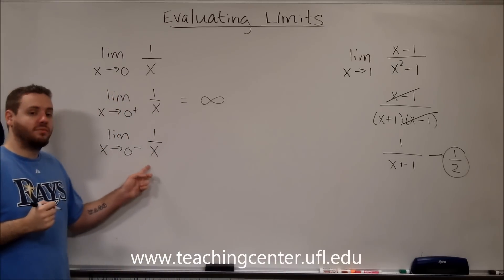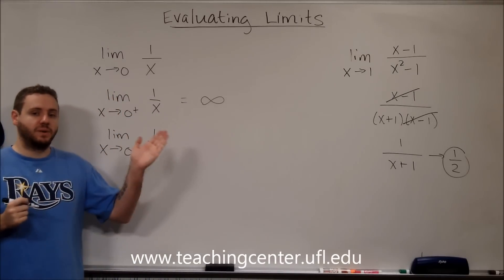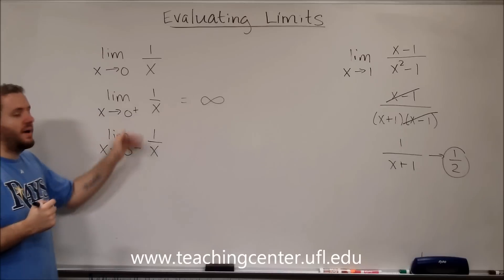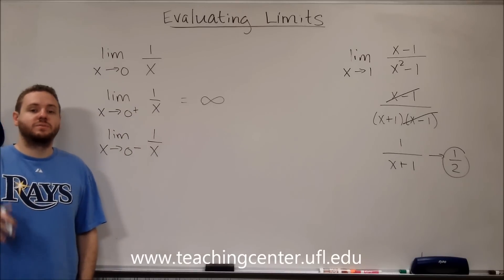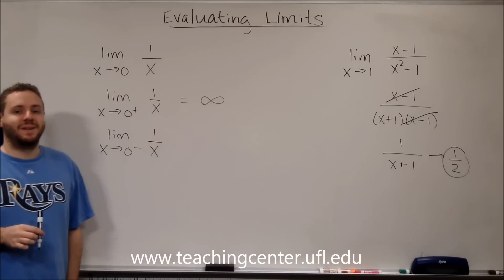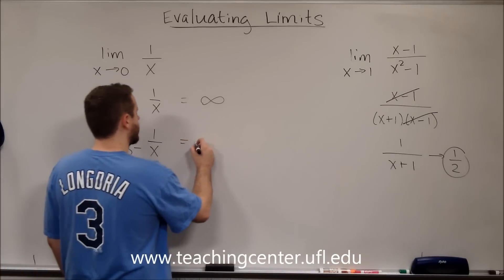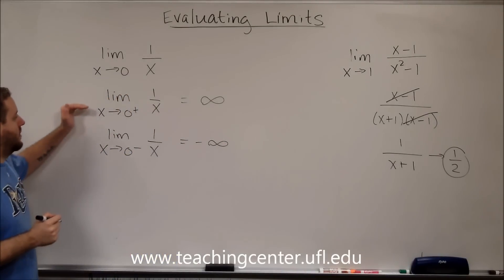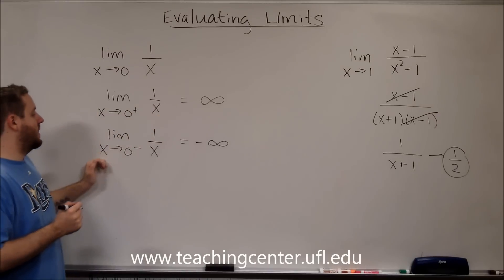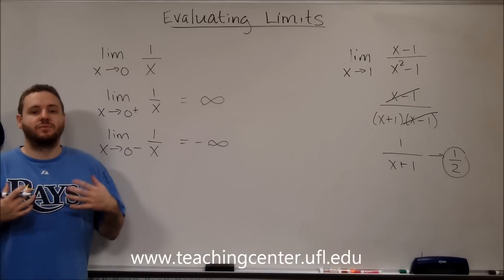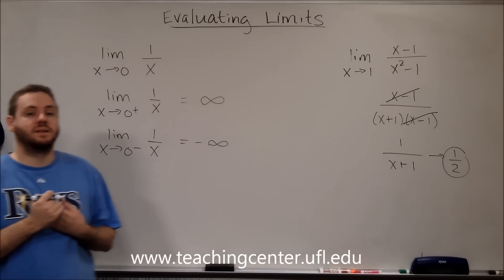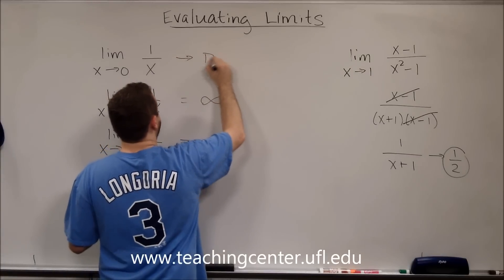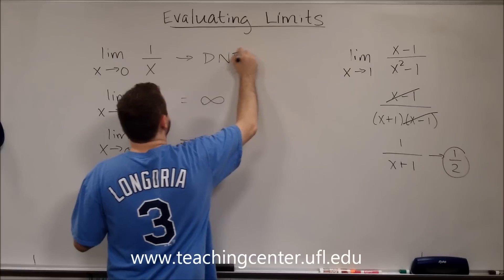Similarly here, now we have really small negative numbers. We're getting close to zero from the negative side. Again, you're dividing by a very small number, so the number gets really large. However, these would be negative, so we get negative infinity. From the right we had infinity, from the left we had negative infinity, therefore this limit does not exist because the left and the right are the same. So you would say that your original limit does not exist.